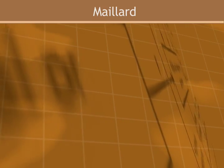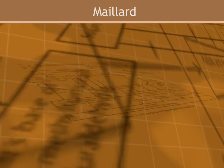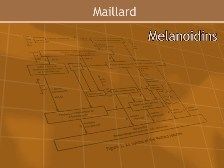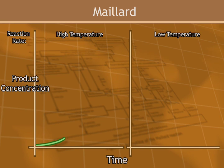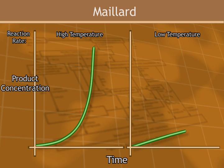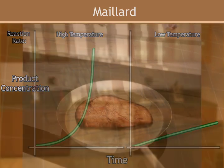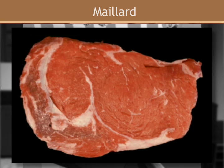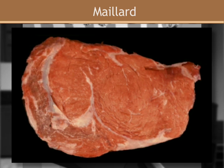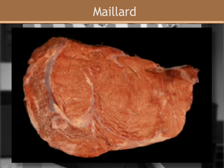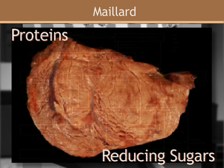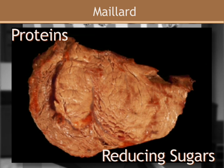Once the initial Maillard reaction begins, a cascade of additional reactions takes place, eventually forming brown nitrogen-containing polymers and copolymers called melanoidins. The rate of the Maillard reaction is accelerated by heat. However, the Maillard reaction can still readily occur at lower temperatures, but the reaction rate is much slower. An example of the desirable result of the Maillard reaction is the look and taste of a cooked steak. The initial step occurs between the denatured proteins on the surface of the meat and the reducing sugars present, and the cascade of reactions that follow creates the meaty flavors and brown color of cooked meat.